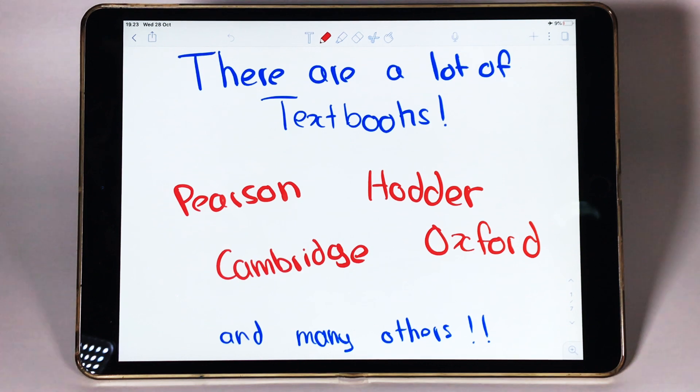You may be surprised to note that the textbook you use is not the only textbook for that subject in IB. You see, there are tons of publishers that make textbooks for the IB. The most popular ones are like Pearson, Hodder, Cambridge, Oxford.